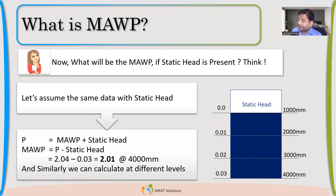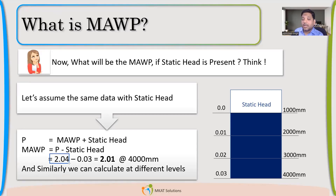If my pressure vessel's MAWP was calculated without considering any static head and that is 2.04 MPa — that is the MAWP of my component. Now what will the MAWP become for the complete vessel? It is 2.04 minus the static head. The total static head is 0.03 MPa, so the MAWP becomes 2.01 MPa.